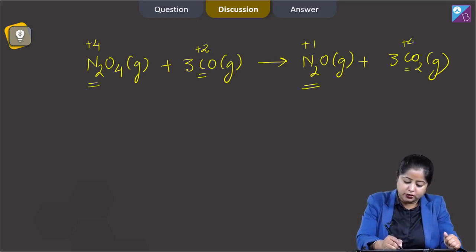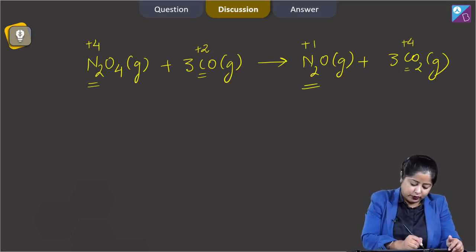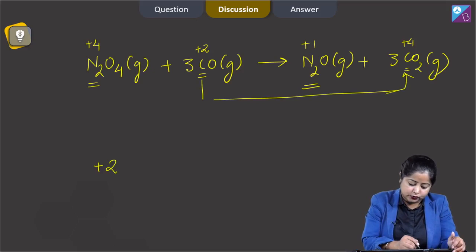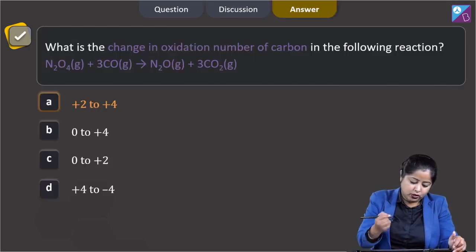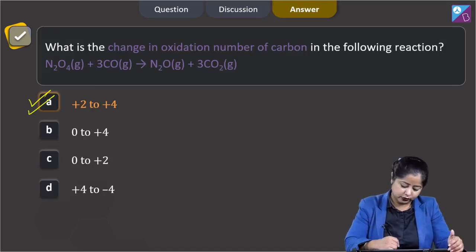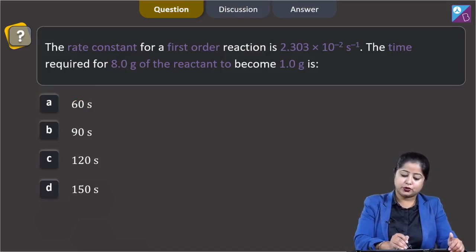In CO2 the oxidation state of carbon is +4. Since we have to find the change in oxidation state of carbon, we can clearly see that it changes from +2 to +4. So the correct answer is option A.